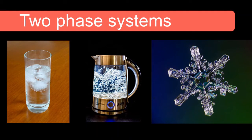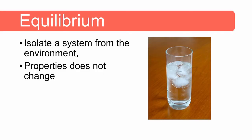There are three two-phase systems possible between the solid, liquid, and gas phases of water. Ice and water is a solid-liquid two-phase system, depicted in the first picture which is a glass containing water and ice. A liquid-gas interface results when water is boiling — we usually call the gaseous phase of water in a two-phase system a vapor. Lastly, when a snowflake forms, water vapor is transformed directly to a solid phase in what is called desublimation.